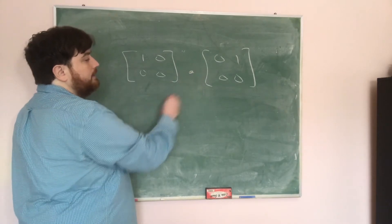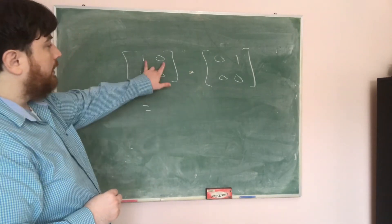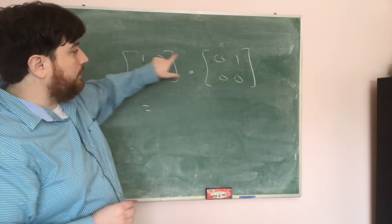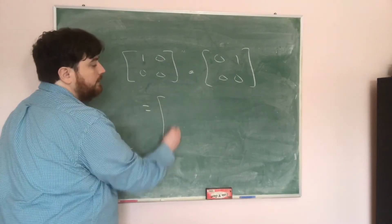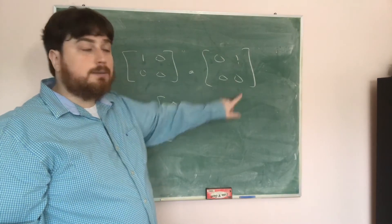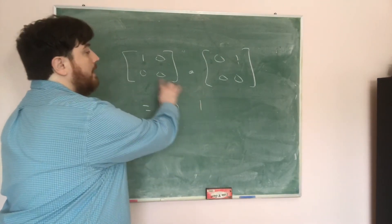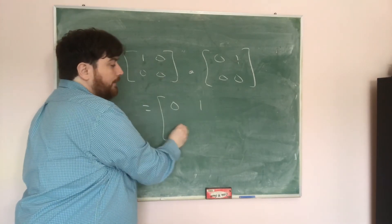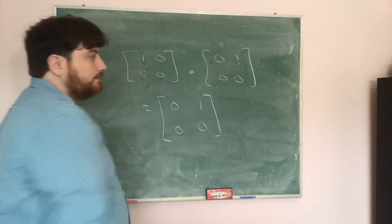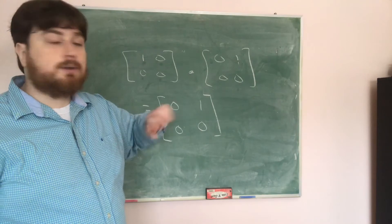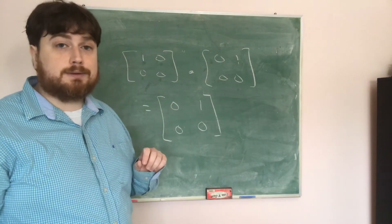If I take these and multiply as written, I get the first row times the first column is 1 times 0 plus 0 times 0 is 0. Then I get 1 times 1 plus 0 times 0 is 1. And then I'm going to get 0 times something plus 0 times something, so both of these are going to be 0. So I've got 1, 0, 0, 0 times 0, 1, 0, 0 is 0, 1, 0, 0.